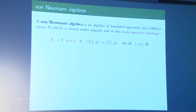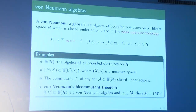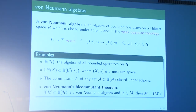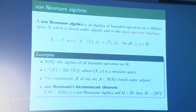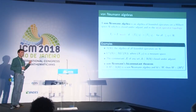Some basic examples: the algebra of all bounded operators on H is a von Neumann algebra. If (X, μ) is a measure space, then every L∞ function on X gives an operator on L²(X) by pointwise multiplication, and this copy of L∞(X) is a von Neumann algebra. Also, if A is any set of operators closed under adjoint, then its commutant A' — the set of all operators commuting with every operator in A — is a von Neumann algebra. A beautiful theorem of von Neumann says any von Neumann algebra M containing the identity equals the commutant of its commutant.